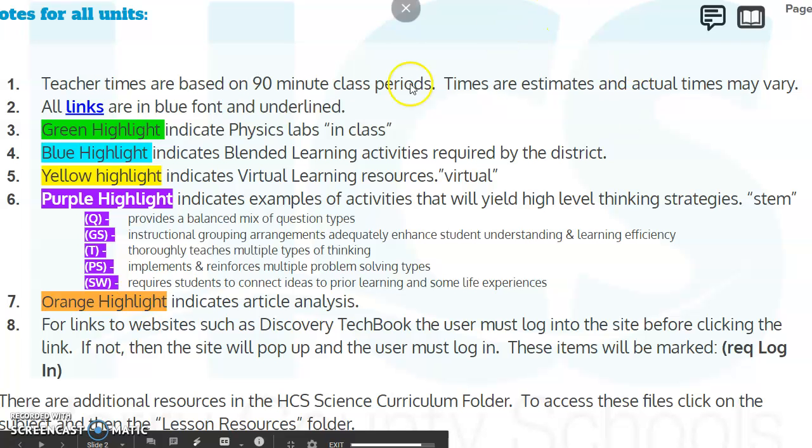The first thing that you're going to see is the notes for all the units. We did a little bit of a change here where green is in-class, so if you see labs or things of that nature, it will be green. Blue is going to be blended learning. Yellow is going to be virtual. Purple is going to be STEM or higher level thinking. And the orange is going to be the article analysis.